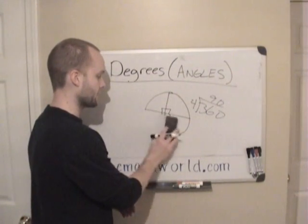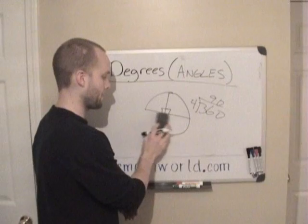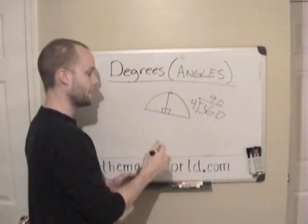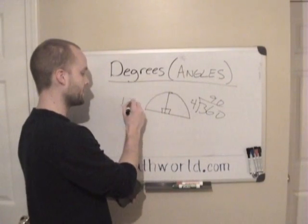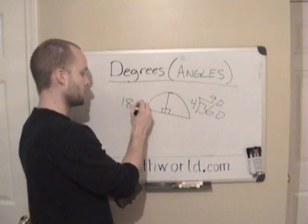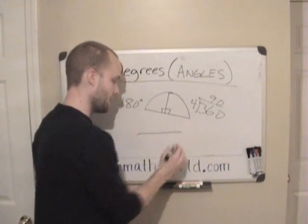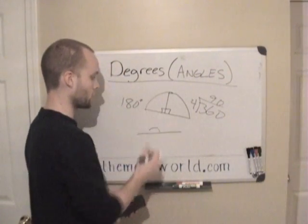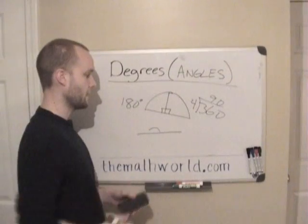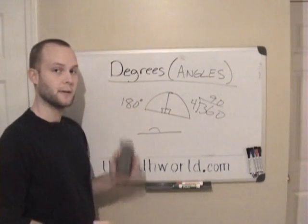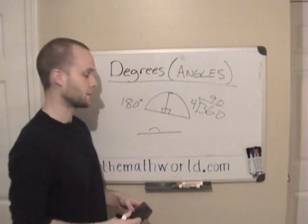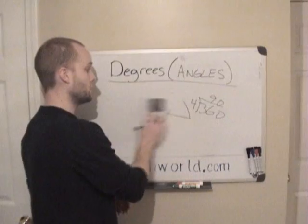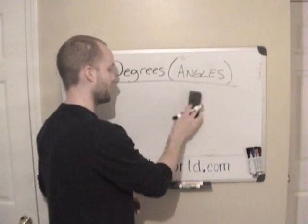Now if you see half of a circle — two right angles together — it's 180 degrees. So if you see a straight line and they ask you what's the angle or degrees, it's going to be 180 degrees, and that's very important to know because you're going to use this a lot.